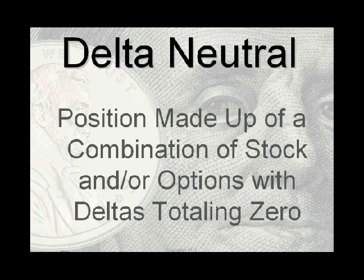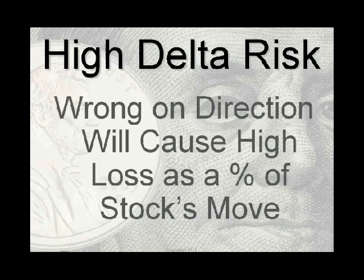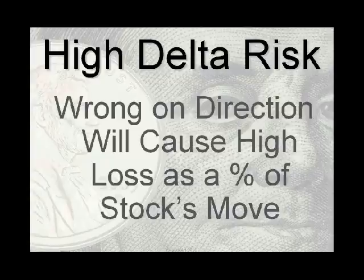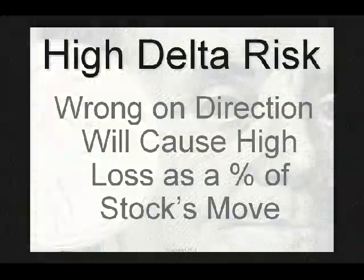It's not necessarily a neutral position because the stock can move one way or another and the deltas change. So understand: delta is the movement of an option as a dollar amount relative to a one-dollar move of the stock. In-the-money options have much higher deltas and much higher cost than out-of-the-money options. If you're wrong on the direction — if you buy a call and the stock goes down — and you bought an in-the-money call, you're going to lose a high percentage of the stock's price movement.